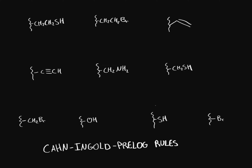What we're going to practice today are the Cahn-Ingold-Prelog rules. These are the rules for prioritizing groups when we're trying to identify chiral carbons. So if we have a chiral carbon and we're trying to rank substituents as 1, 2, 3 to figure out whether it's R or S, we use these rules.